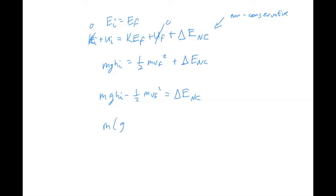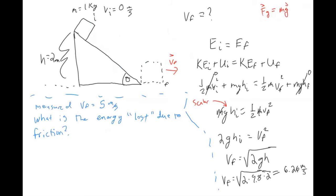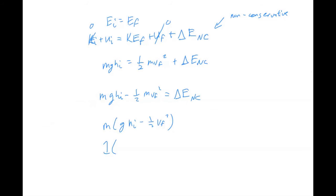So if we plug in our numbers. So this is m times g. So what did I say the mass was? Mass is one kilogram. G is 9.8. The height was two. One half times five squared. So the energy loss due to friction, which is a non-conservative force, is 7.1 joules.